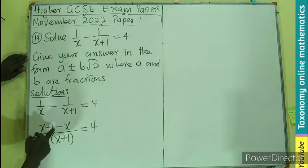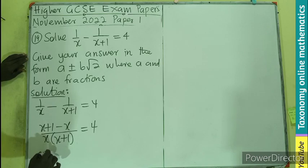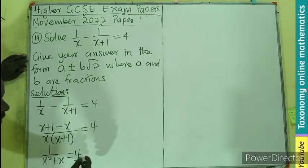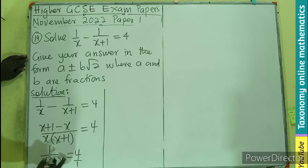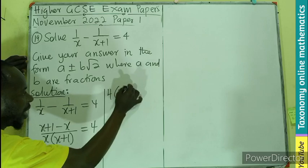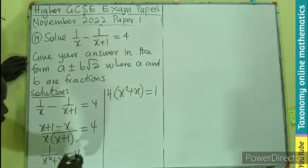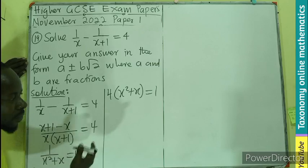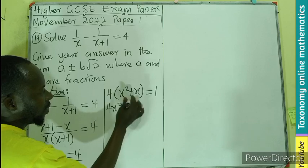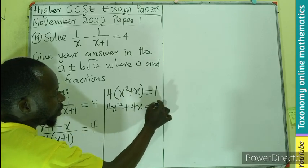So in the numerator, you can see that minus x and x will cancel, leaving 1 over x squared plus x equals 4. Don't forget that 4 can be divided by 1. So we cross-multiply. Let's do that cross-multiplication here. 1 times 1 will give you 1. Then 4 will also multiply x squared plus x equals 1. You can expand to get 4x squared plus 4x equals 1.